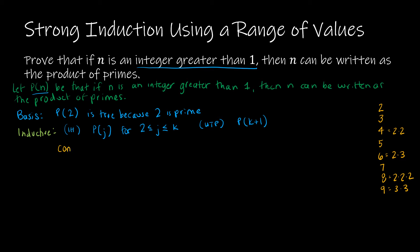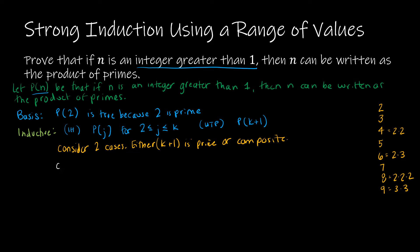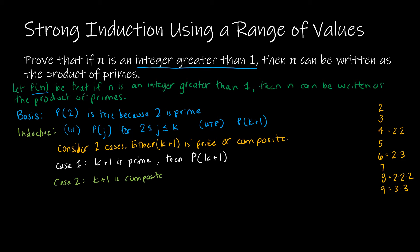So we're going to consider two cases: either k plus 1 is prime, or composite. Case 1: k plus 1 is prime. If k plus 1 is prime, then p of k plus 1 holds, because a prime can be written as a product of primes itself. Then we look at case 2, where k plus 1 is composite. How are we going to show that k plus 1 can, in fact, be written as a product of primes?